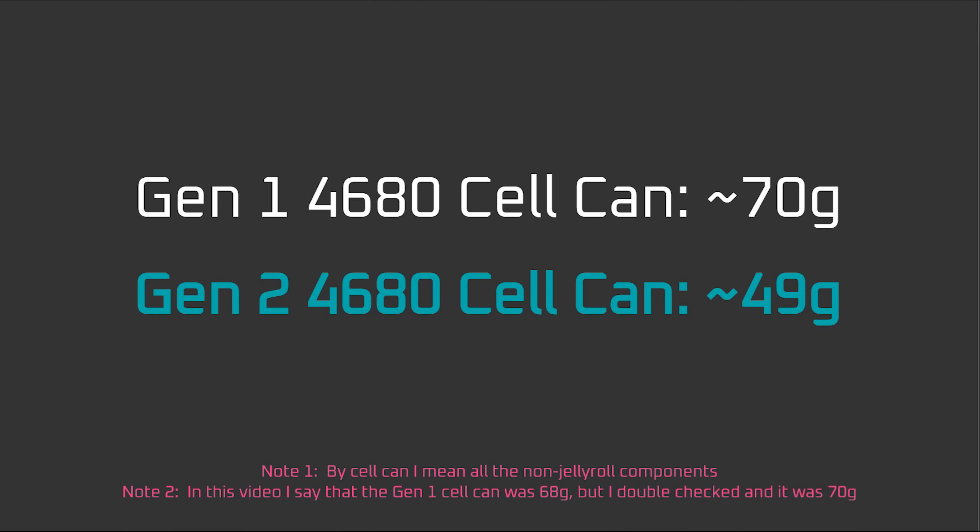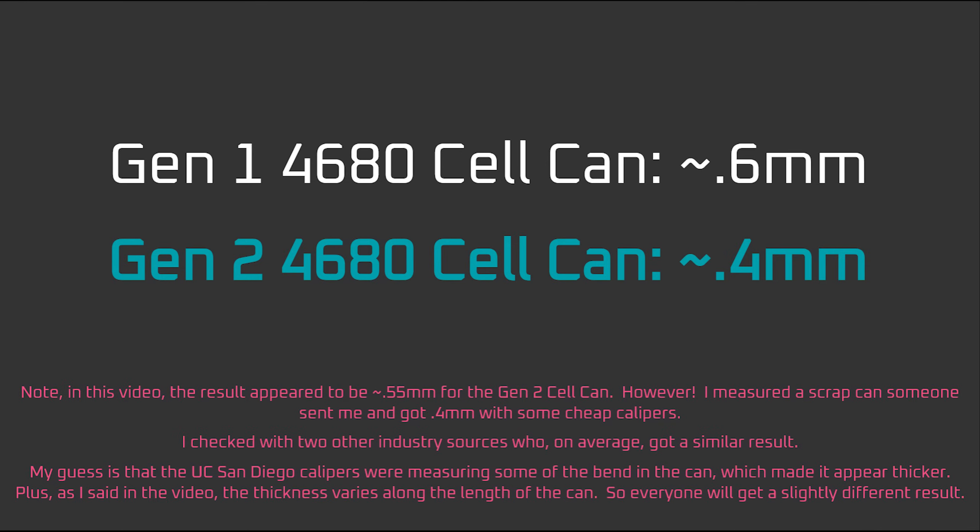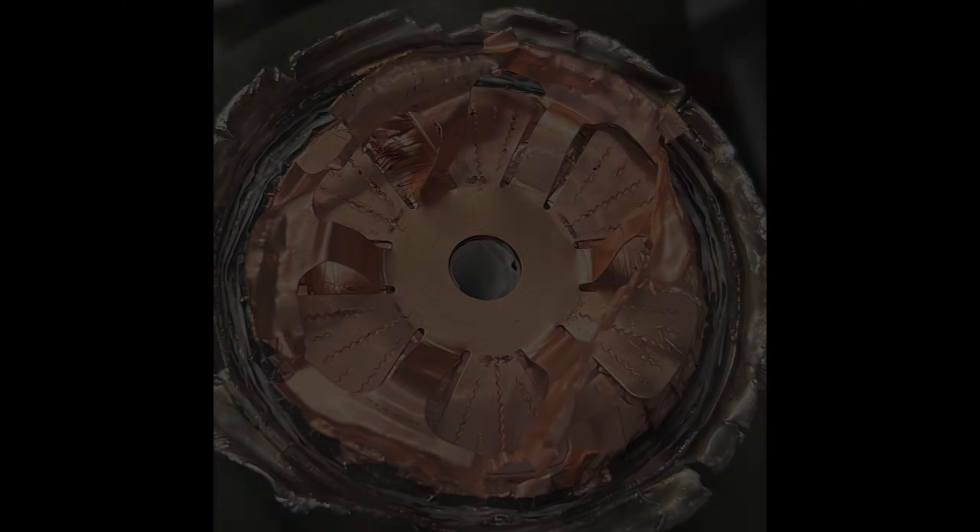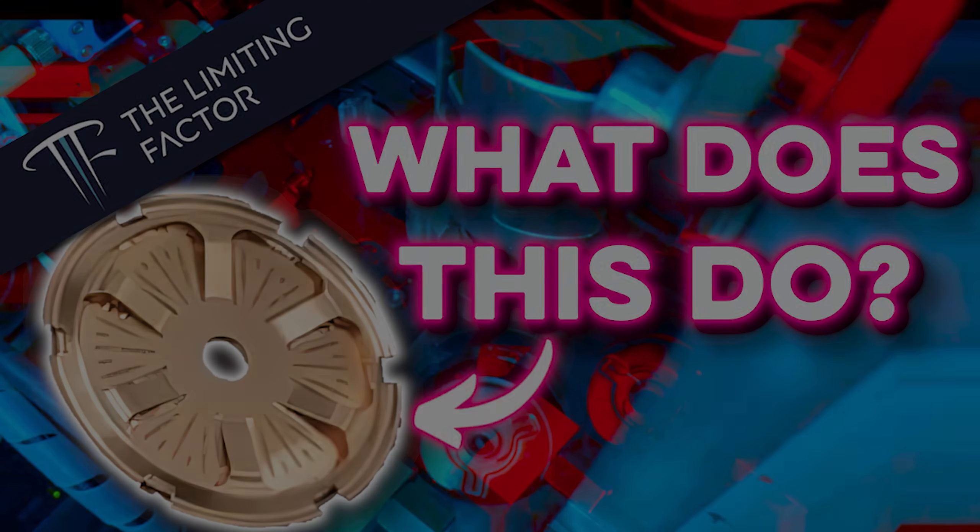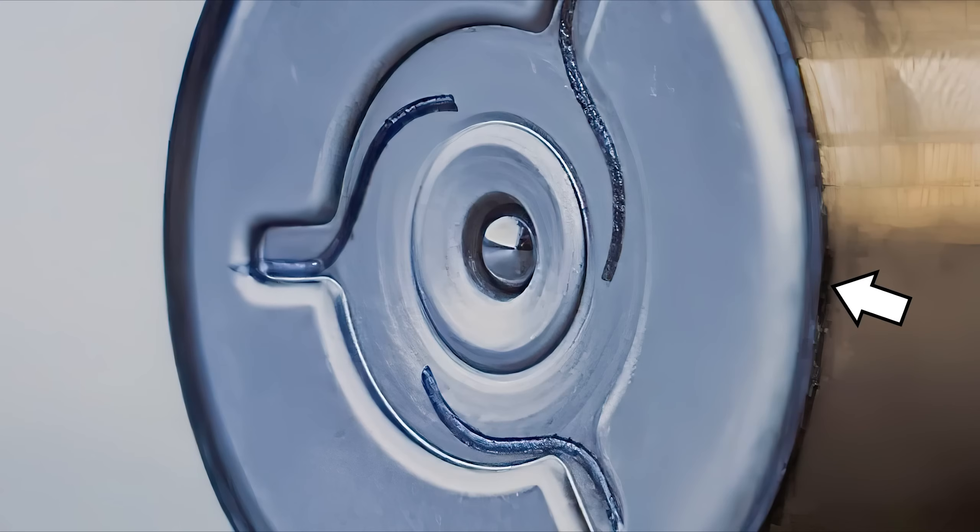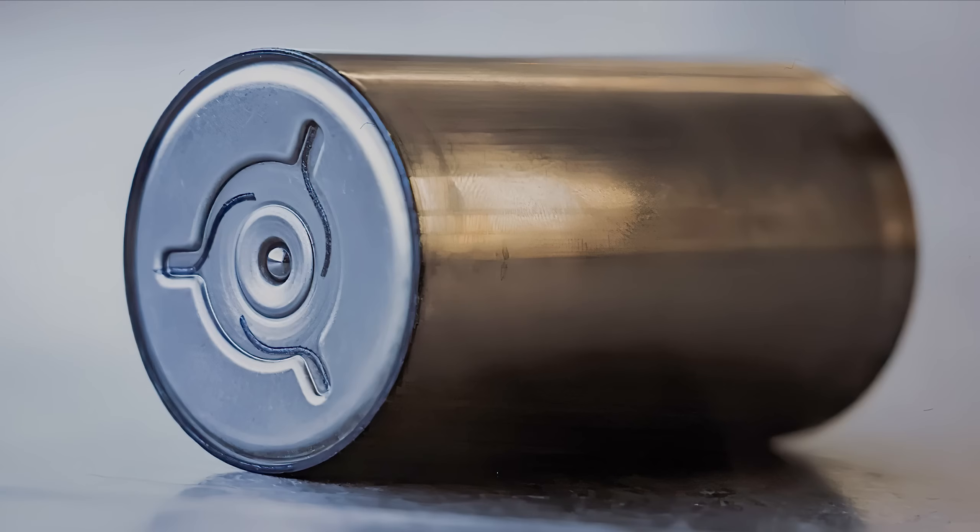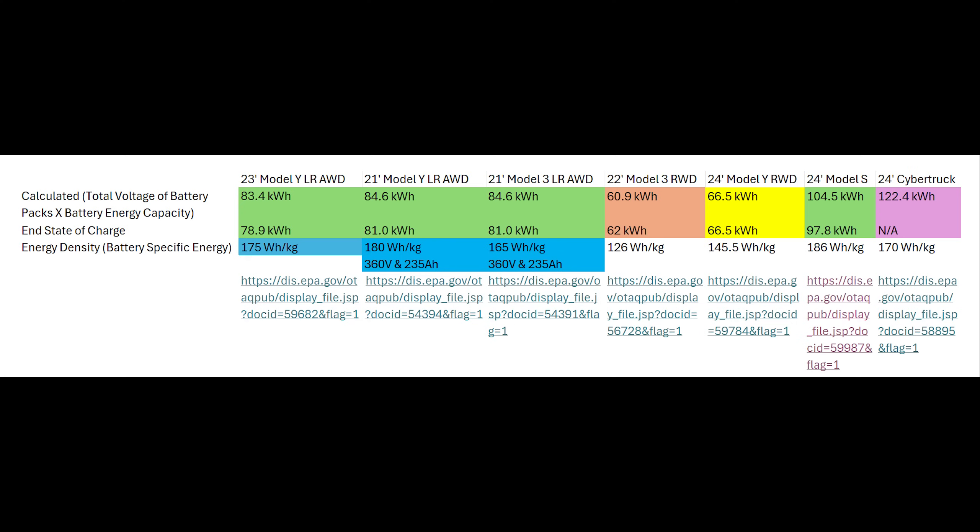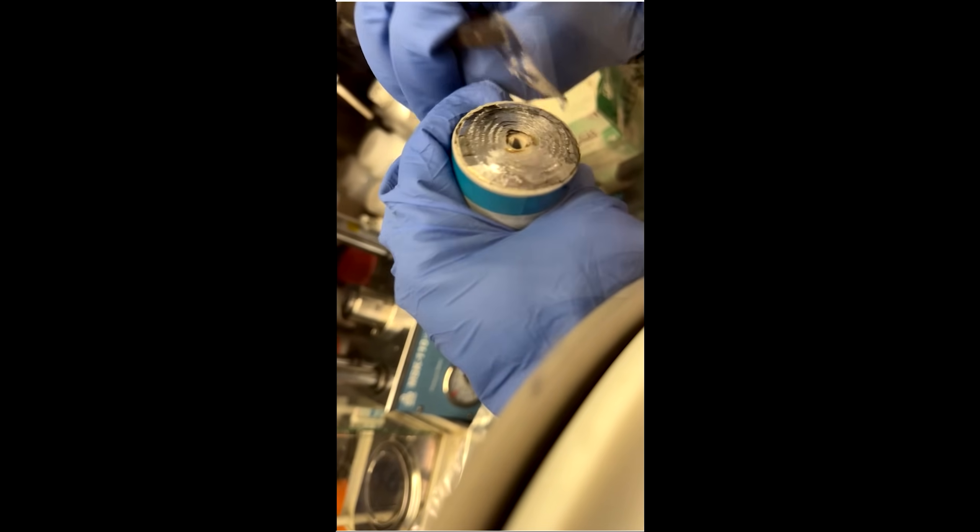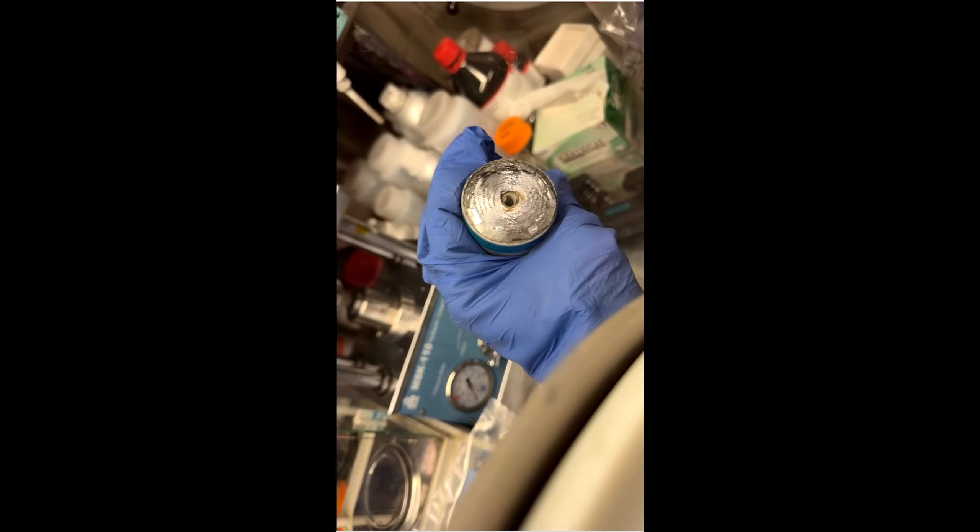The key points from the disassembly are that from the generation 1 4680 cell to the generation 2 4680 cell or Cybercell, Tesla trimmed about 20 grams of weight from the cell can. That was achieved by making the cell can thinner and by removing two parts at the copper anode terminal: the copper current collector and the plastic gasket. As I suggested in previous videos, that in turn was achieved by welding the cell can shut rather than crimping it, and by welding the tabless electrode directly to the lid rather than using the current collector as an intermediary. The next video, which will release in two weeks, will be an in-depth look at the energy density of the generation 2 4680 cell and how it compares to the other battery cells that Tesla uses. Then, in the following video, I hope to release all the specs and data gathered from the teardown by UC San Diego.